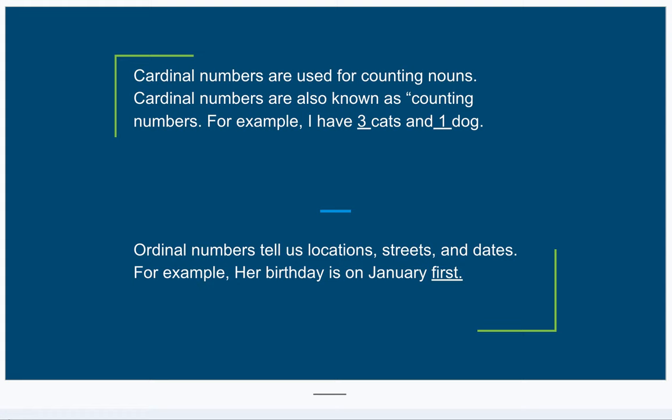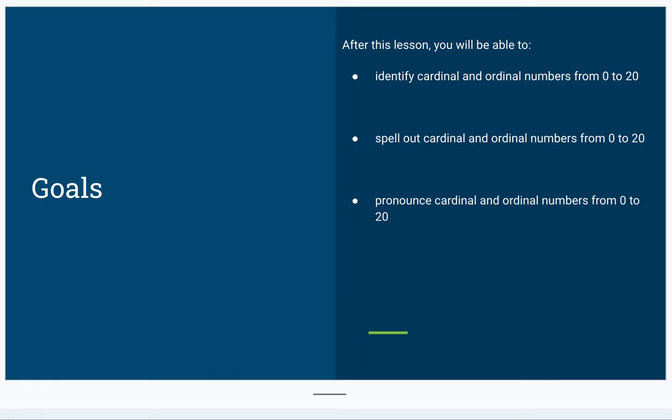On the other hand, we have ordinal numbers. Ordinal numbers tell us locations, streets, and dates. For example, her birthday is on January 1st.